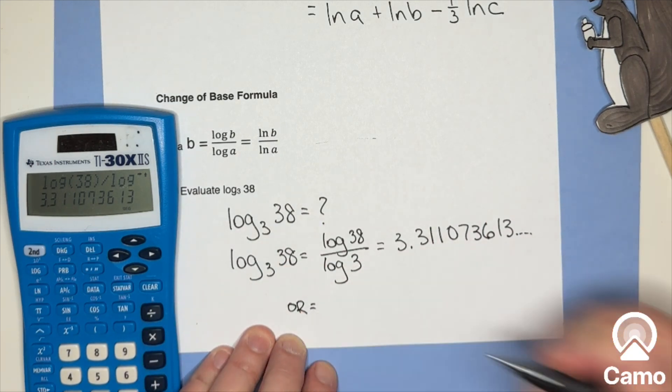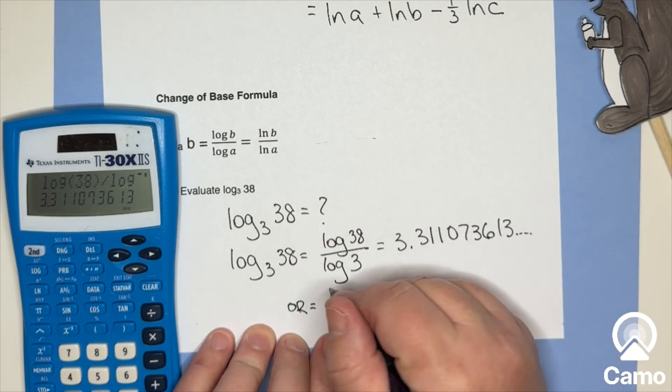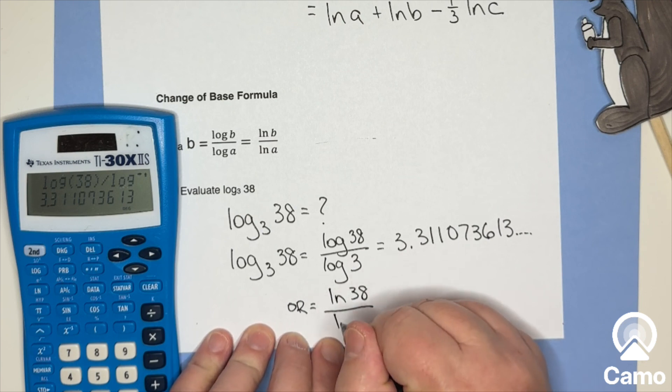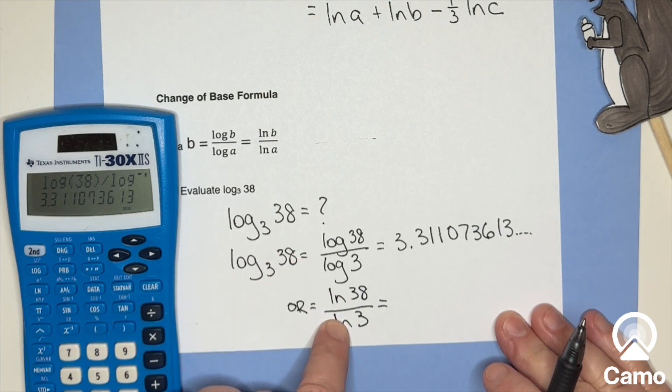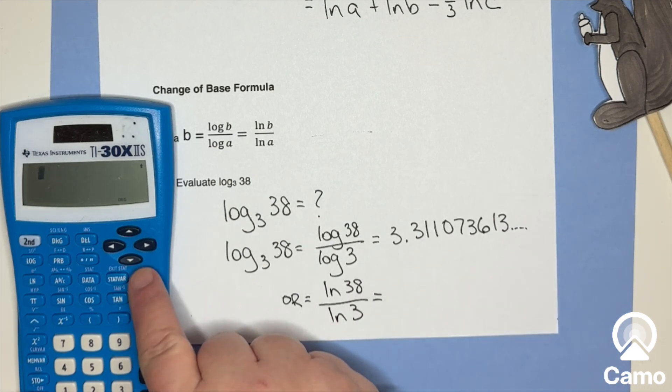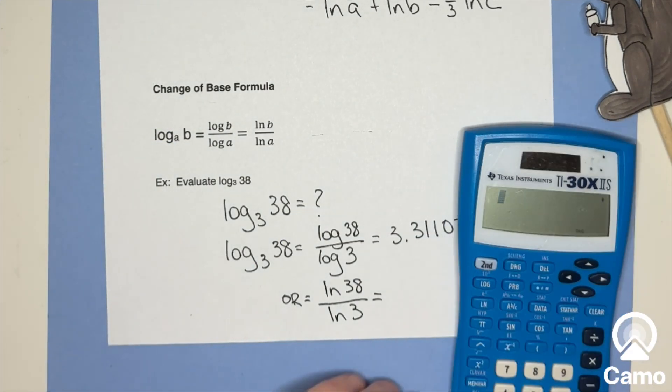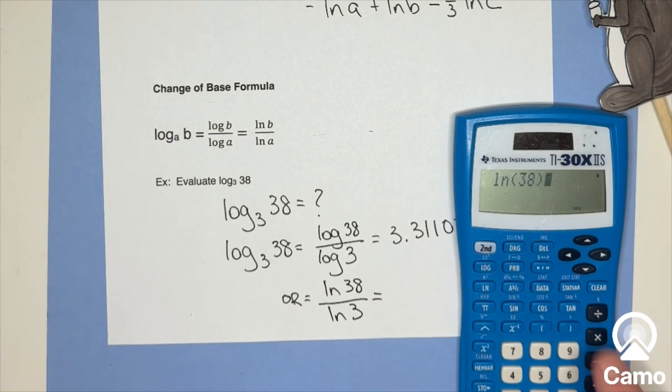Keep in mind, change of base doesn't have to be common log. It could be natural log. And this I think is really cool that the ratio of the logs is what's important. So we could use log base 10 or log base E. So let me go ahead and clear this and let's try it with natural log and check to see. So I've got natural log of 38, close parenthesis, divided by natural log of three, again, close parenthesis. And I get, ta-da!